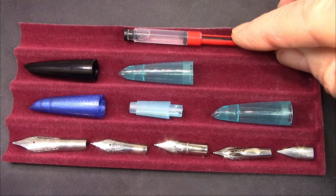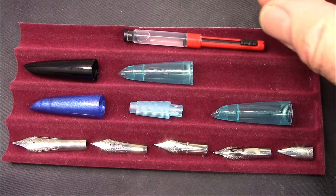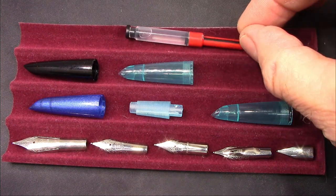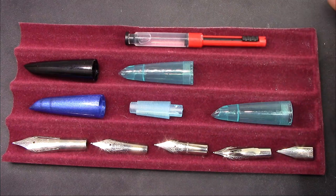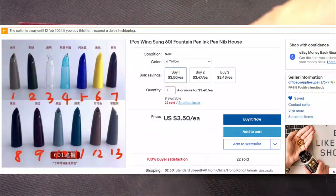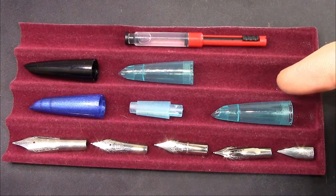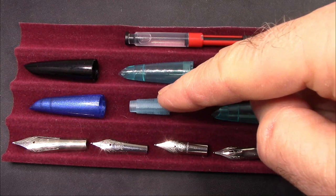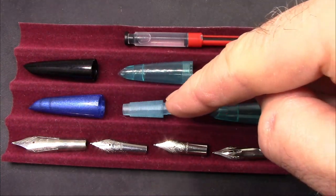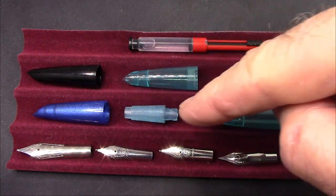I have this little tube of silicone grease here which comes with most of the Wingsung piston fillers, vac fillers, and draw fillers. Then we have a bunch of sections which look like they might work with Wingsung 601. And here's a feed or the ink collector. The feed would go inside of there.